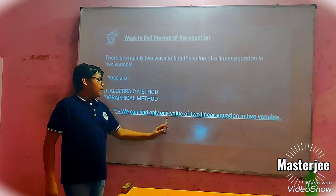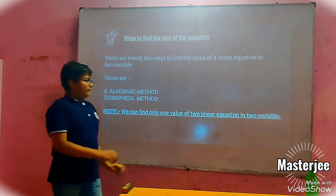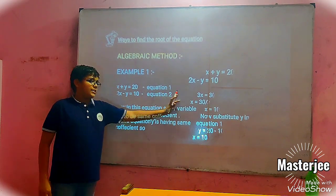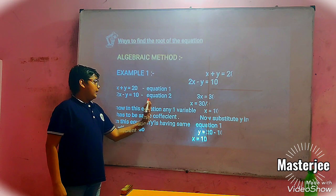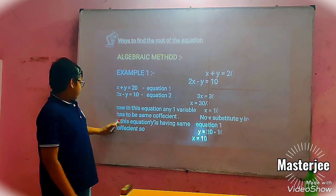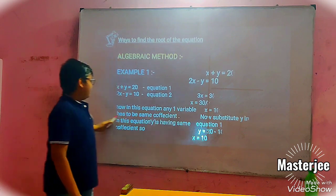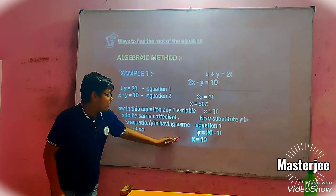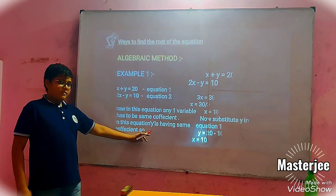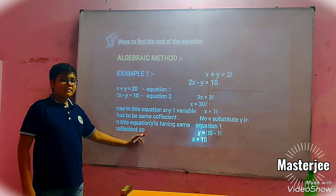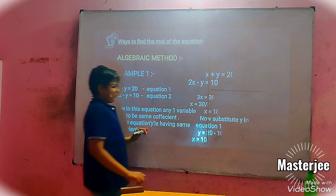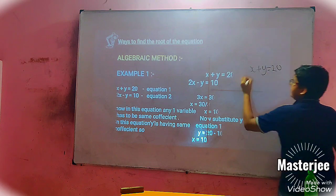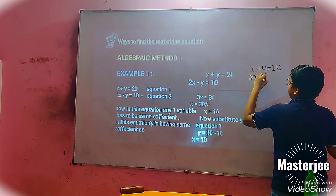We can find only one value using 2 linear equations in 2 variables. For example, let X plus Y equal to 20 be equation 1, and 2X minus Y equal to 10 be equation number 2. In this equation, any one variable has to have the same coefficient. Here, Y is having the same coefficient.